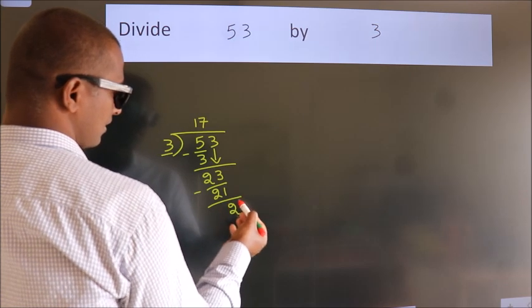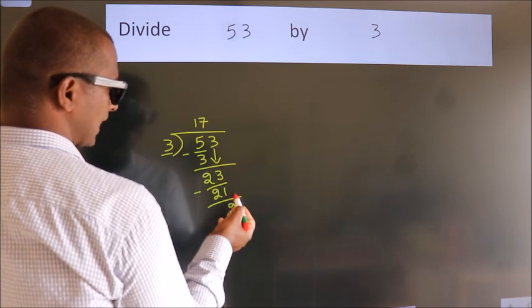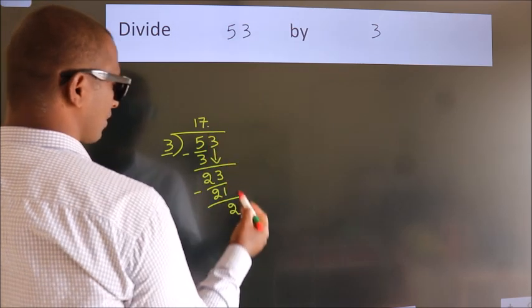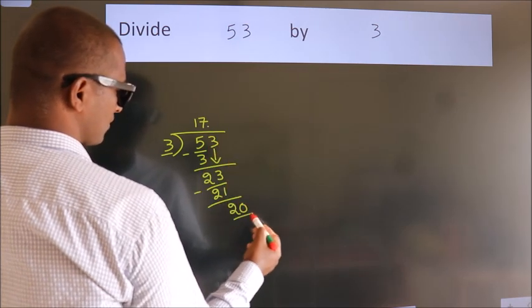After this, no more numbers to bring it down. So, what we do is, we put dot take 0. So, 20.